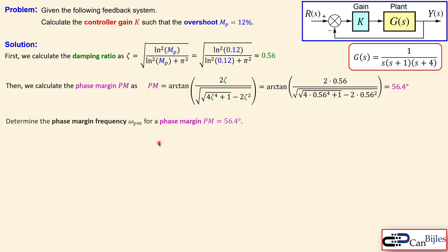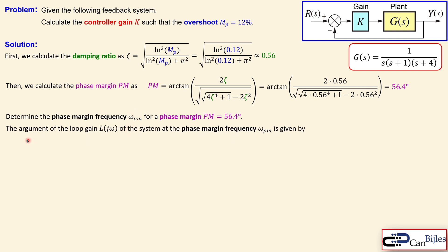Now we need to determine the phase margin frequency, which is the ω_pm. For this specific phase margin of 56.4 degrees, there must be a specific frequency. For that, we need to look at the argument or the phase contribution of the loop gain. The argument of that loop transfer function L is given by minus 180 degrees plus the phase margin. That means at that frequency, I need minus 180 degrees plus the required phase margin.